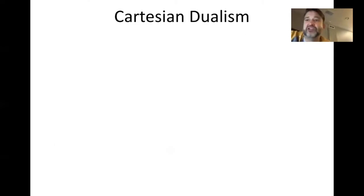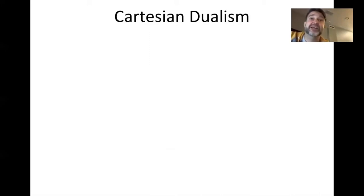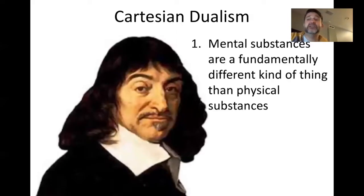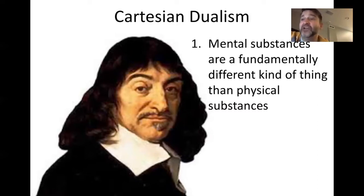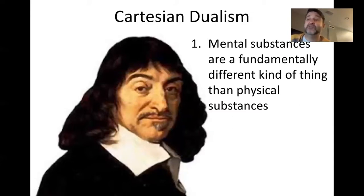A first answer to this question is provided by Cartesian dualism. We've talked a little about Descartes before, and we talked about the Cartesian view of belief formation. Descartes, this influential philosopher from the 17th century, essentially offered the following view: mental substances are a fundamentally different kind of thing than physical substances. Some of us may think that minds are physical entities in themselves, but Descartes thought no — they're a radically different kind of thing. So we have physical things, and we also have mental things, and mental systems are radically different kinds of things than our physical bodies.